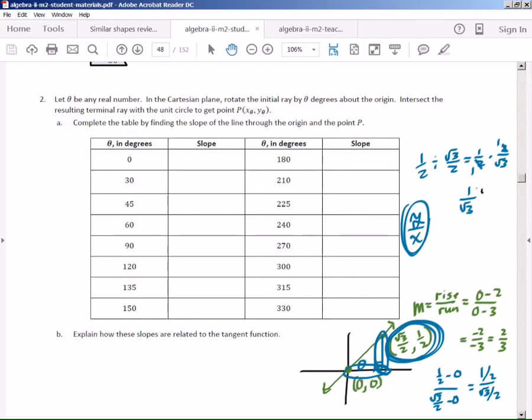And then if I multiply the top by √3, the bottom by √3, we get √3/3. So that's how you find the slope, a.k.a. tangent, of each of these angles.